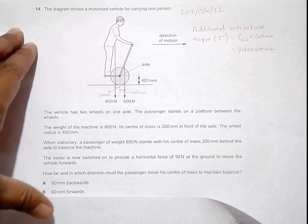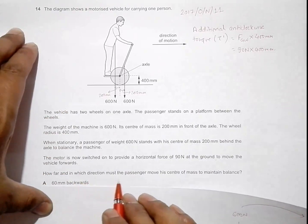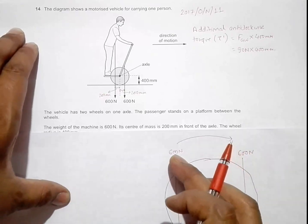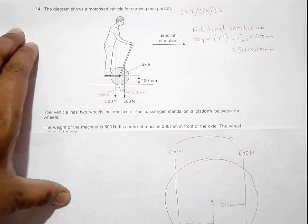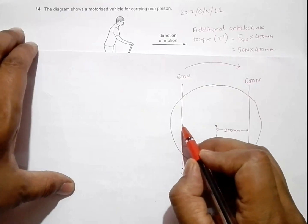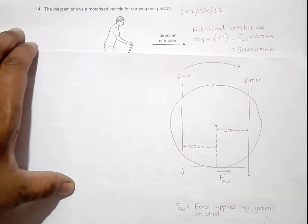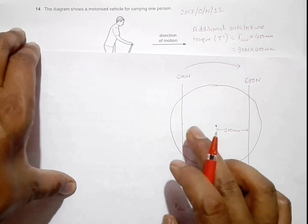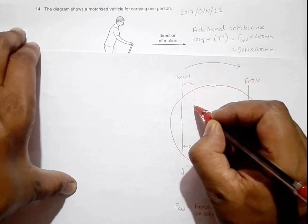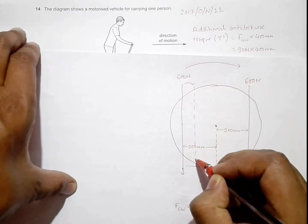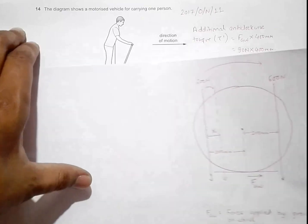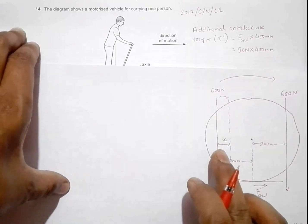The question asks: how far and in which direction must the passenger move their center of mass to maintain balance? Since we have an additional anti-clockwise torque, the person must reduce the anti-clockwise torque. They must shift slightly forward so their center of mass moves forward by a distance x.